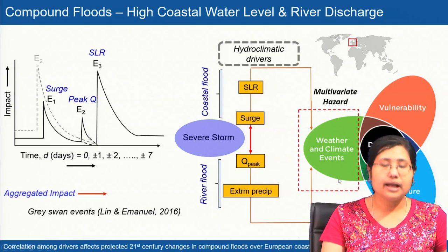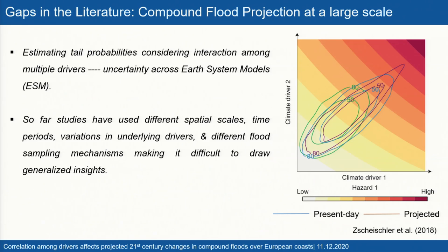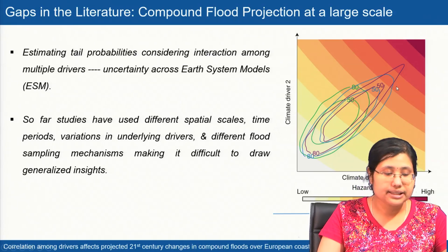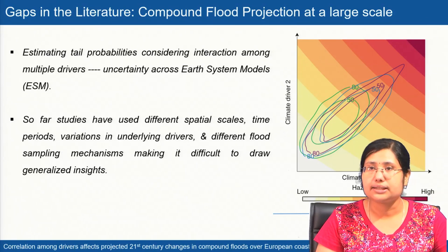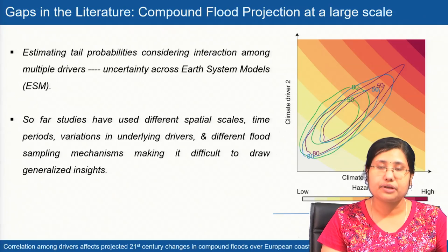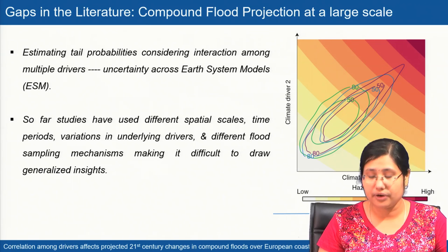When these multiple drivers interact together, they produce an aggregated impact leading to gray swan events. The gap in the literature is to estimate the tail probabilities, considering the interaction among multiple drivers and uncertainty across earth system models which interact in the projection time window. So far, studies have used different spatial scales and time periods, as well as variation among underlying drivers, making it very difficult to draw generalized insight about coastal compound flood for any location.